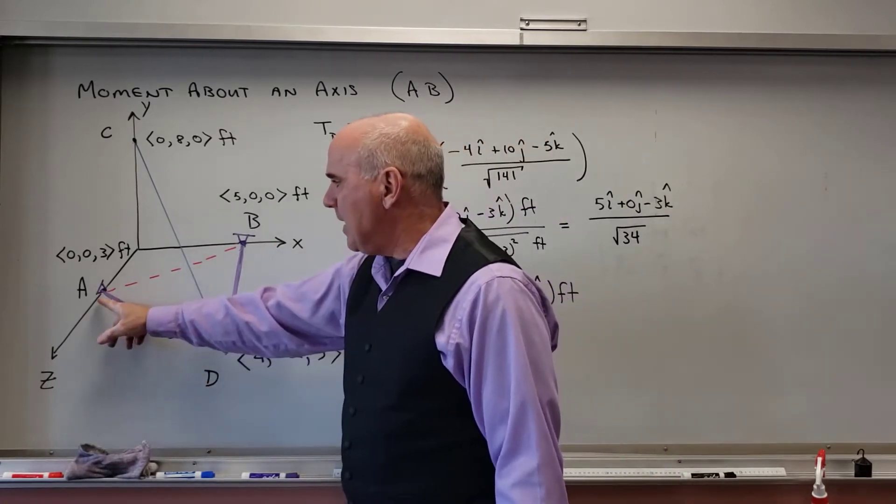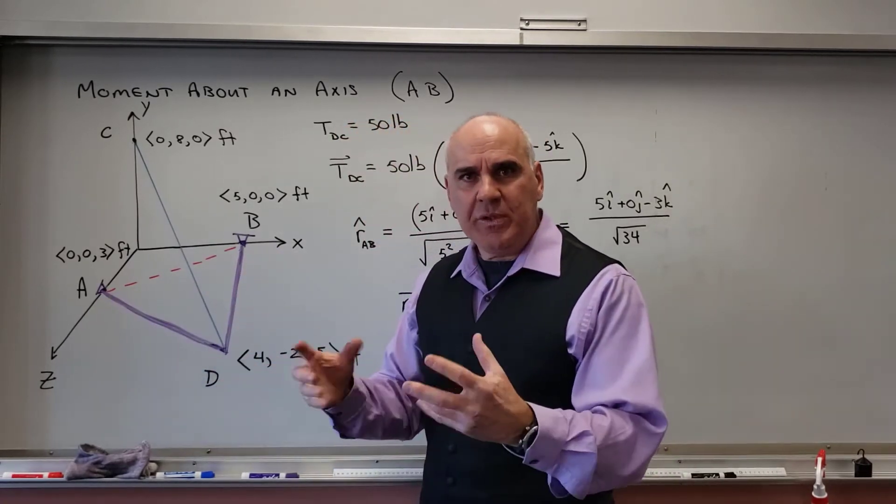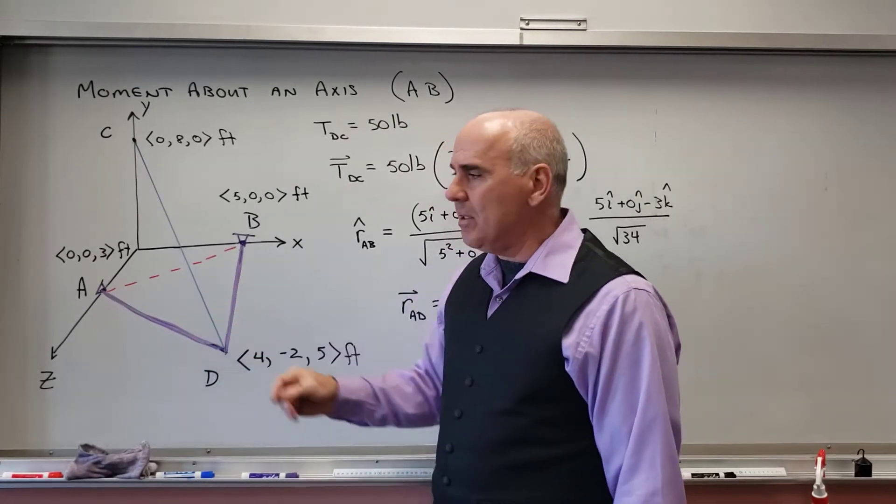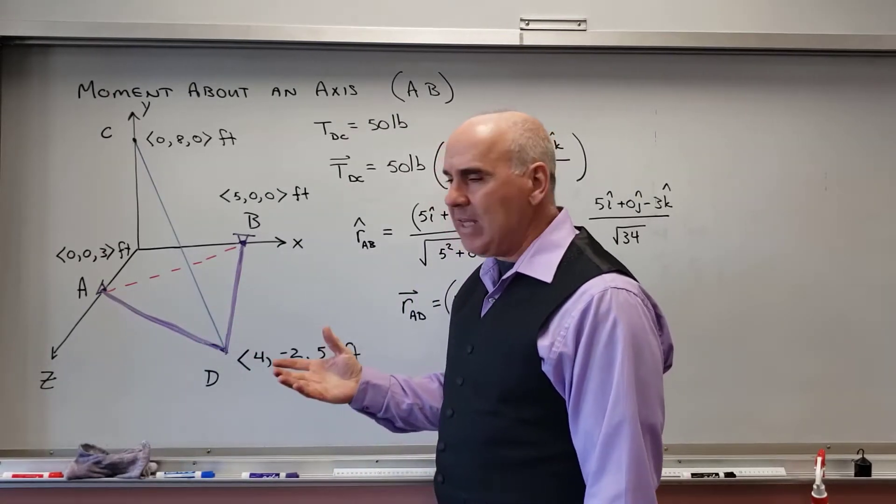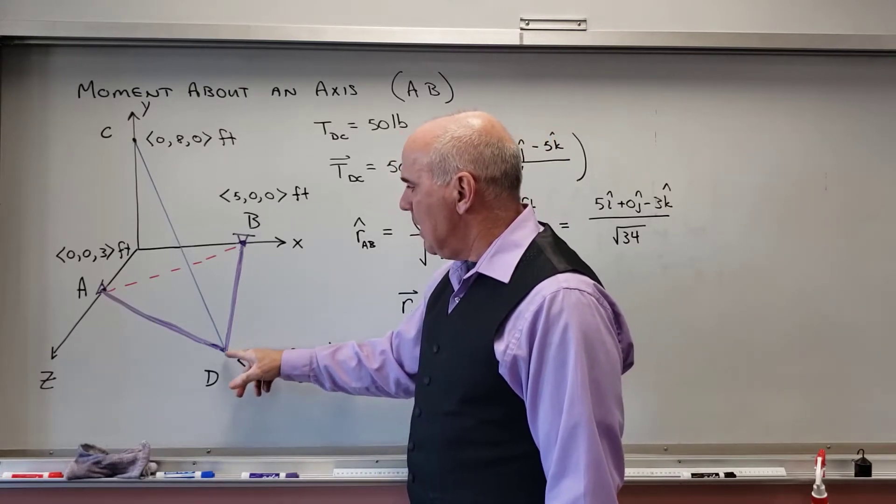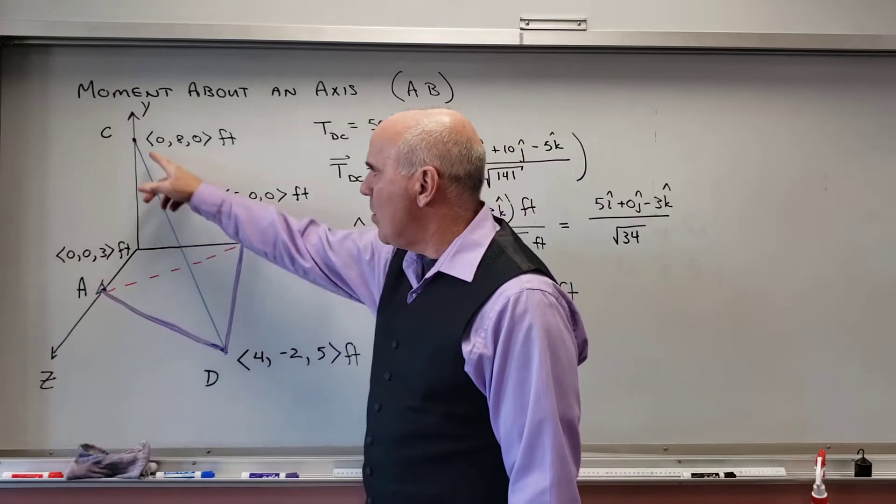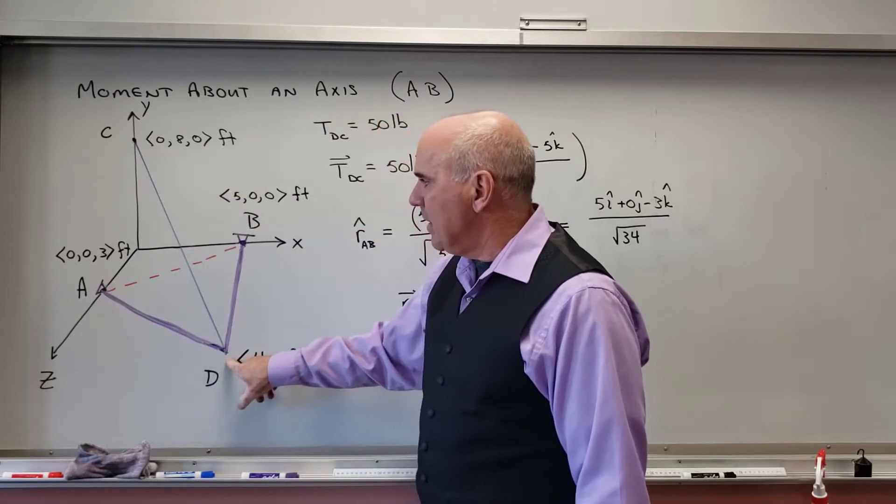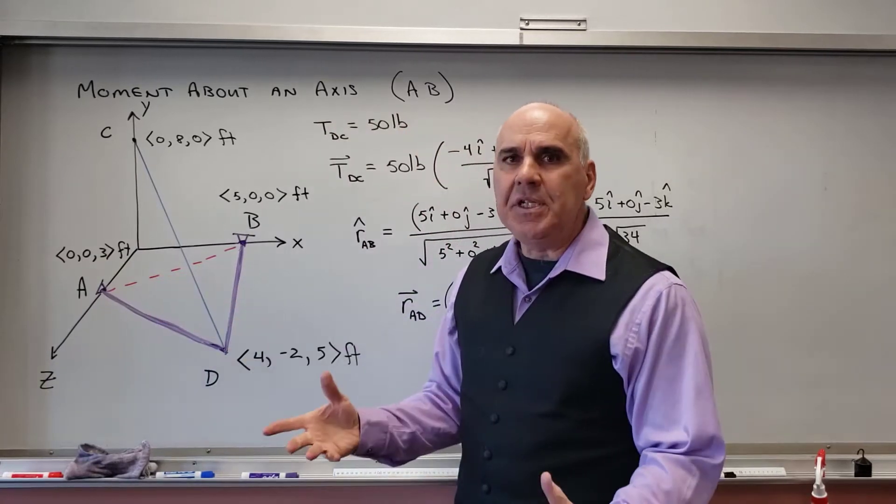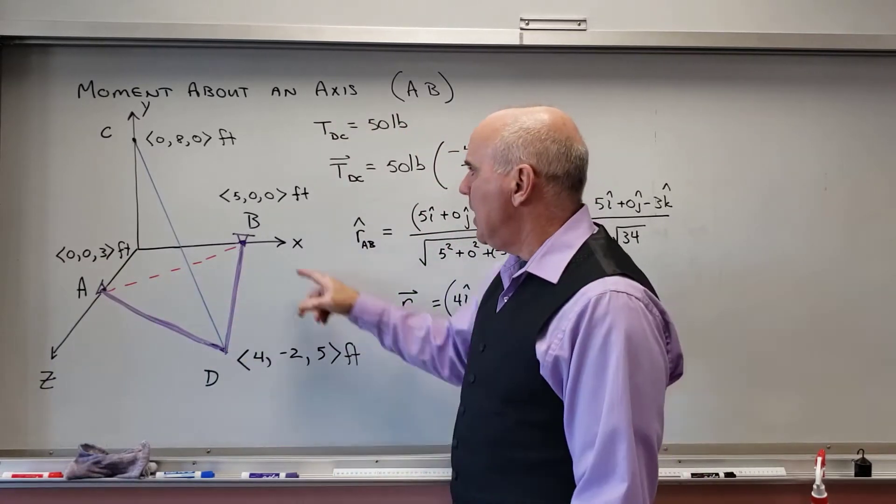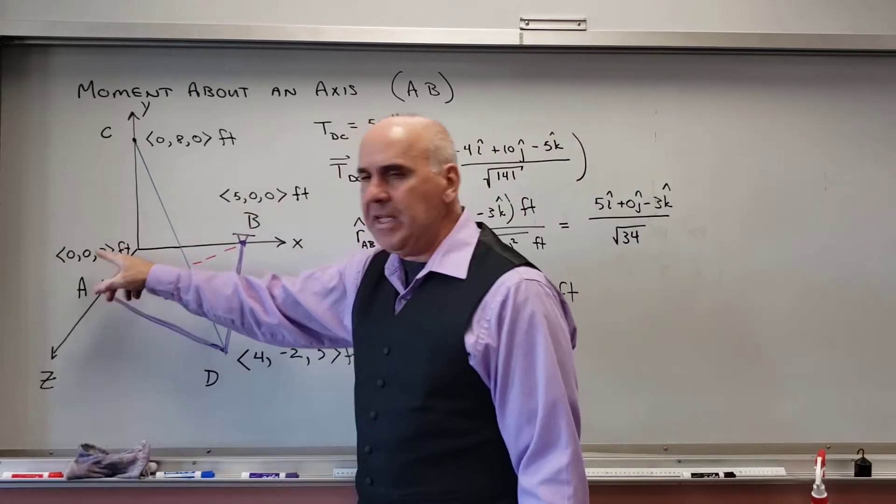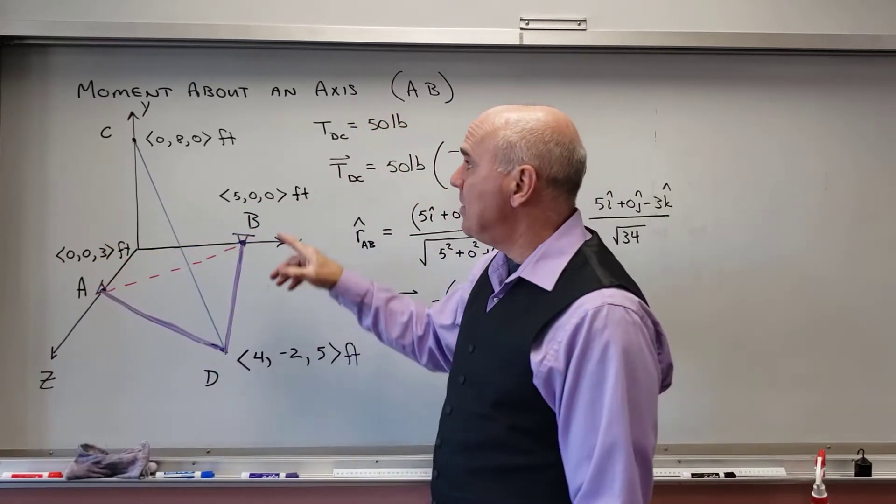It's attached at A and B to some swiveling capability there, some kind of a hinge system, a ball and socket, something like that. Then attached to this is a cord at this corner. So you can see the position of A is (0,0,3) feet, so that's 3k feet, and the position of B is 5i feet. This is just a different notation that you will see me use on occasion.